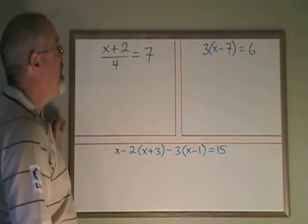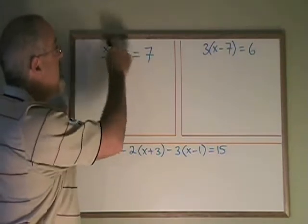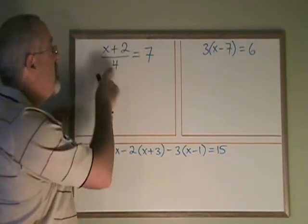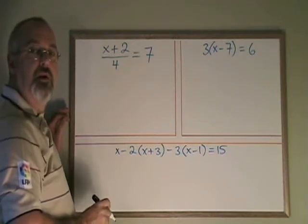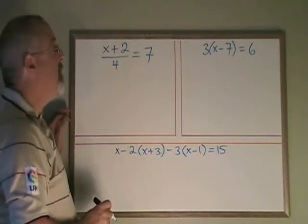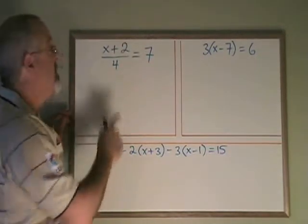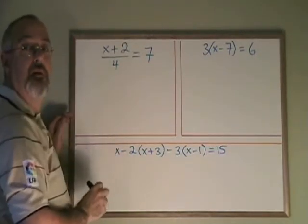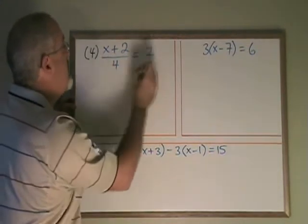Looking at this example, I can see that my variable x is part of an algebraic expression, which is the numerator of what I call a giant fraction. How do we deal with a giant fraction? We use the same skills that we already know. The algebraic expression that contains my x is being divided by a 4. So we do the opposite, and we multiply both sides by 4.